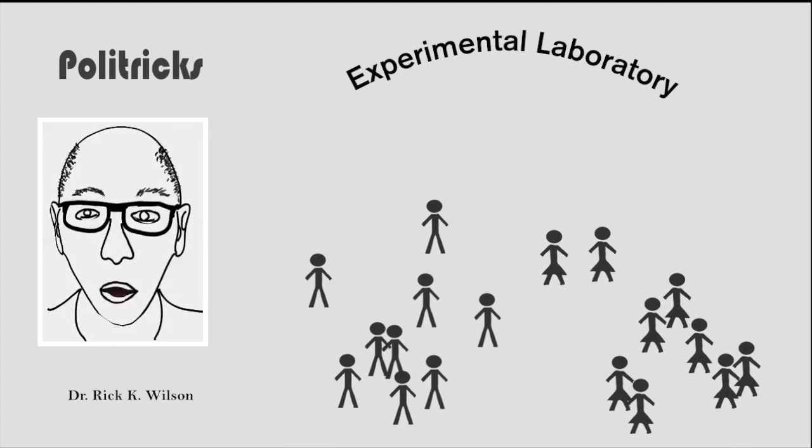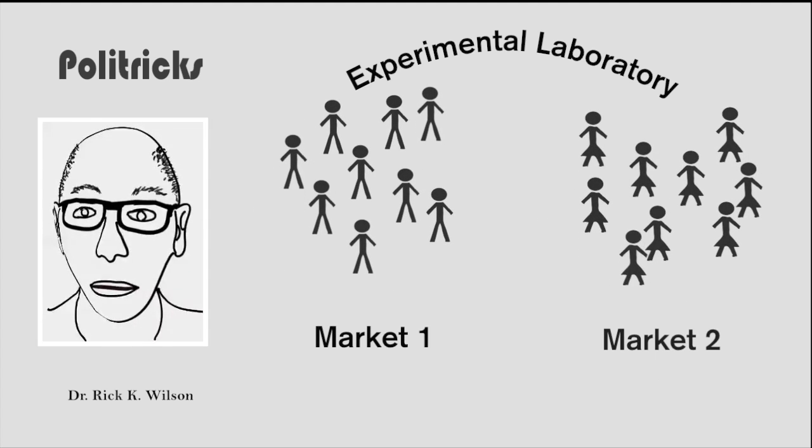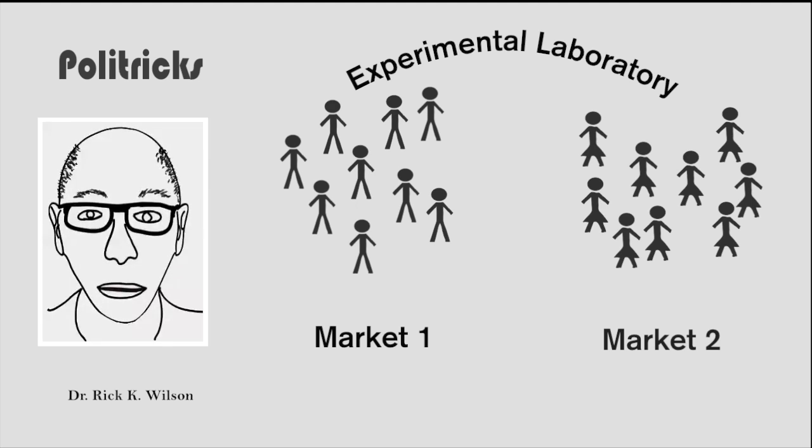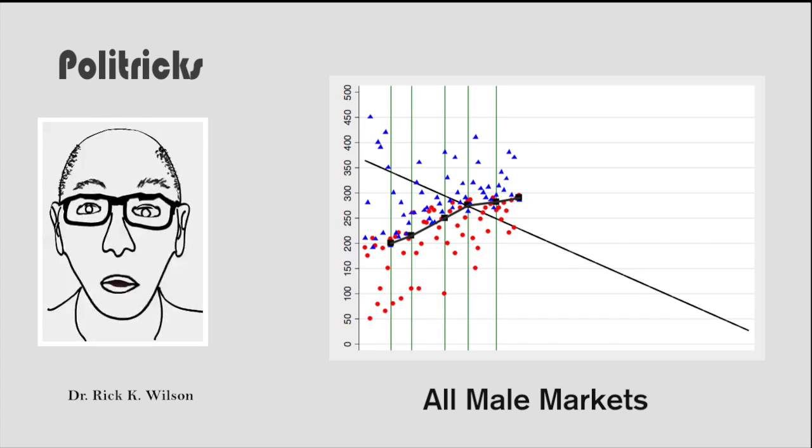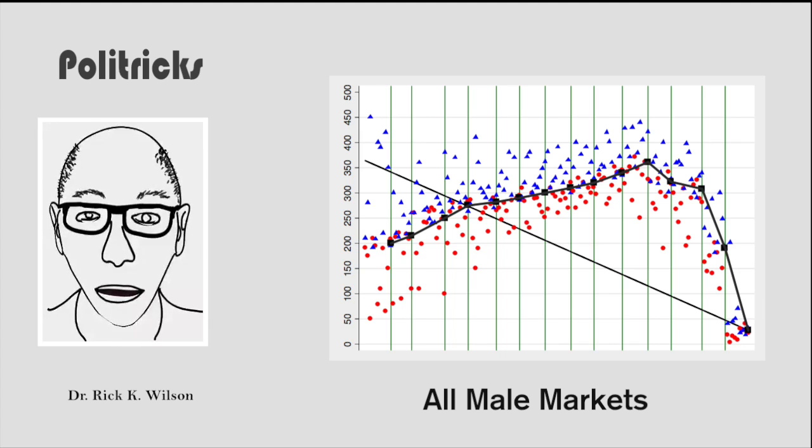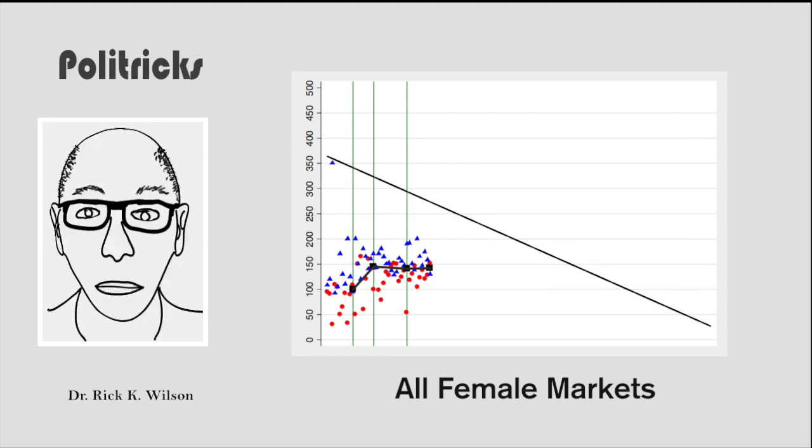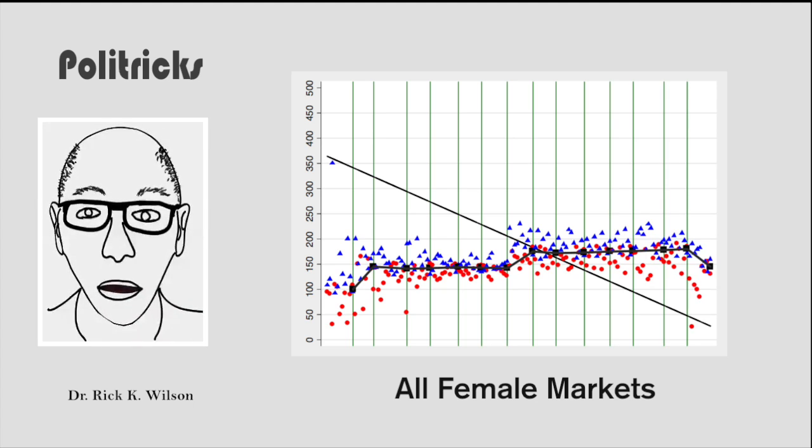Eckel and Fullbrunn create markets consisting of all-male or all-female subjects in the lab. All trading is done by computer, and the traders are anonymous. However, everyone can see that the group is the same sex. When looking at the average price for a share by period, sure enough, the all-male markets look just like the typical bubble experiment. By comparison, the all-female markets do not have a pronounced bubble. Women don't make bubbles.